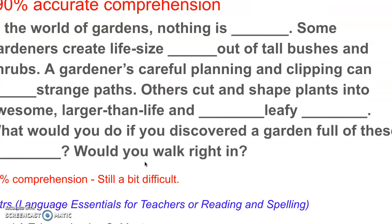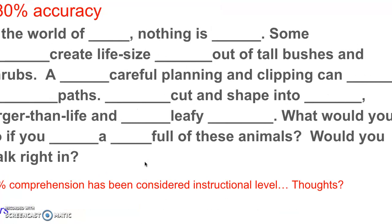This is just an example of 90% accuracy in comprehension, which sounds like an A. But if you take a minute to read, you'll see the missing words greatly affect your comprehension. The same thing is true at 80%, which is often considered instructional level — you don't get the gist of the article. The purpose of these slides is for you to understand a little bit how your students might feel when they are reading in your class.